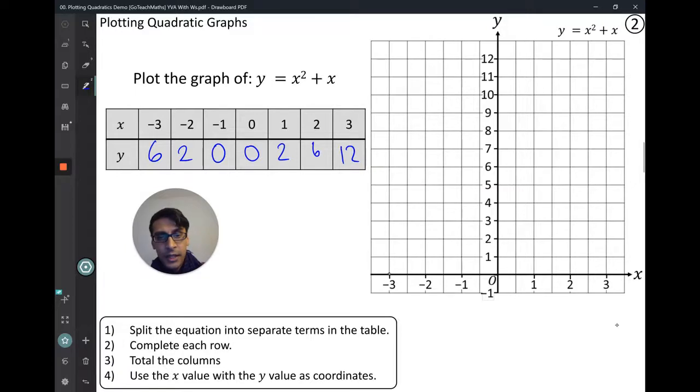You're going to plot your points. Negative 3, 6. So that's your first point there. Your coordinate. Negative 2, 2 is your second coordinate. Negative 1, 0. And then we have 0, 0. We have 1, 2. We have 2, 6. And we have 3, 12. Okay, so you should have plotted all of those points. Now what you'll notice is you've got two points at the bottom.